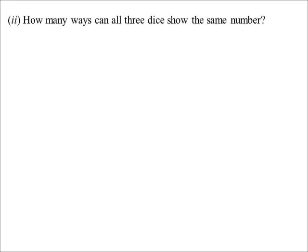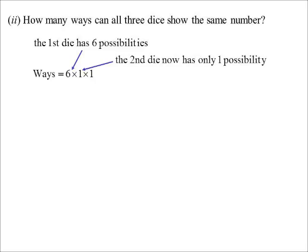What about if all three show the same number? Whenever we're trying to work out number of ways, we look after the conditions first. The condition here is all three dice show the same number. So I say 6 × 1 × 1. The first dice — it doesn't matter what number it shows, so there are six things it could show. But after that, there's only one way the second dice can go because it's got to show the same number, and only one way the third dice can go. So all up, there are six different ways.